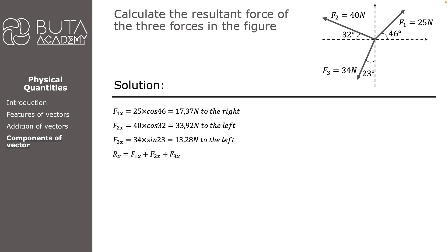RX is equal to the sum of all horizontal components, but there is a trick here. Unlike the previous question, in this one components of vectors are in various directions. So we must decide which direction to consider as positive and which as negative. For the horizontal axis, we choose right as positive and left as negative. Only F1x is positive; F2x and F3x are negative. As a result, RX equals 17.37 minus 33.92 minus 13.28, giving RX equals negative 29.83. Due to the minus sign, RX is 29.83 N to the left.